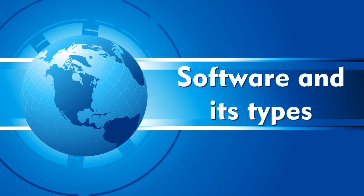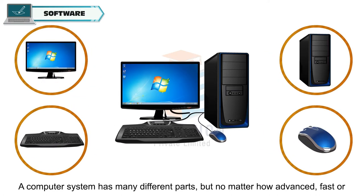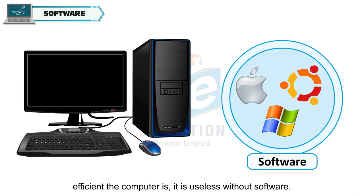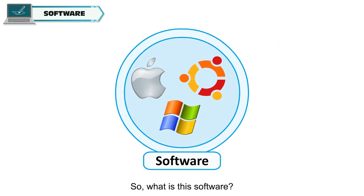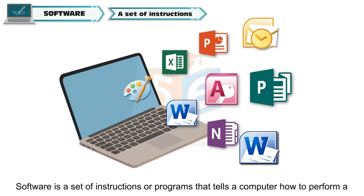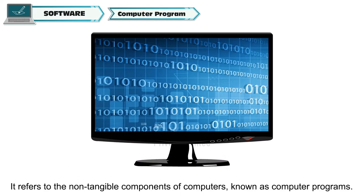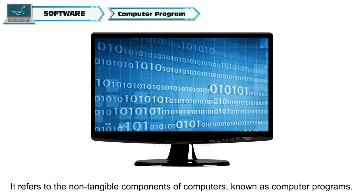Software and its Types. A computer system has many different parts, but no matter how advanced, fast or efficient the computer is, it is useless without software. So what is this software? Software is a set of instructions or programs that tells the computer how to perform a specific task. It refers to the non-tangible components of computers known as computer programs.